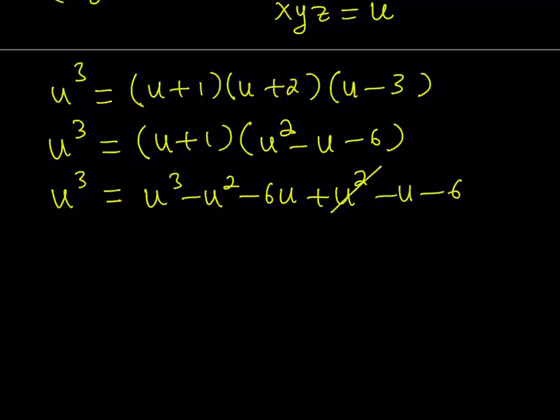u squared cancels out and u cubed cancels out, leaving us with 0 on the left-hand side. If you put all the u terms on the left-hand side, we get 7u. I can't make the joke 2u here because we don't have a 2. But I can say 7u is equal to negative 6, which implies that u is equal to negative 6 over 7.